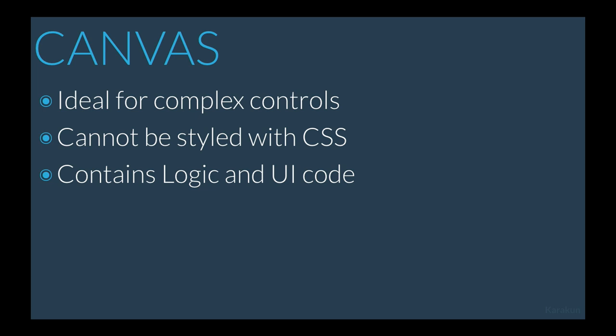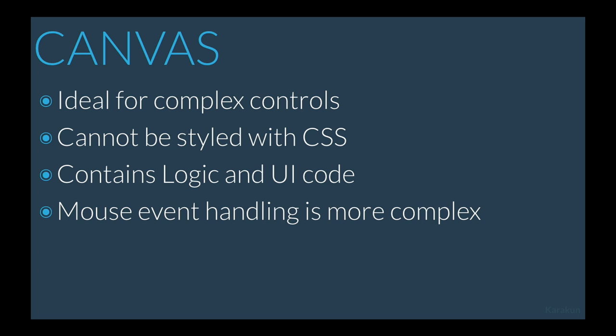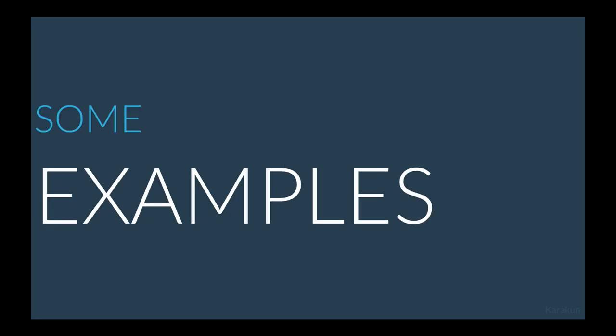Canvas cannot really be styled with CSS — in principle it's just one node. Mouse event handling is the tricky part: there's only one node, so when you click inside you have to figure out where you clicked. Also, canvas is not supported by JPro for web deployment. Canvas is a performance accelerator on the desktop but a performance downbreaker on the web for JPro. So if you'd like to do something for the web, avoid canvas if possible.